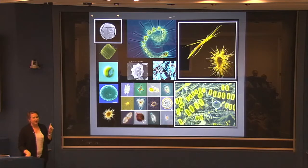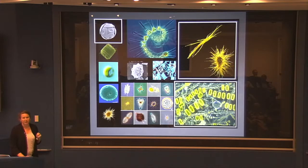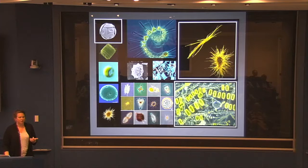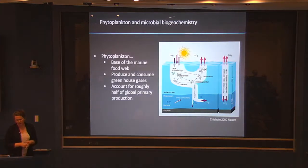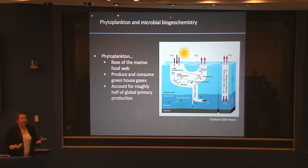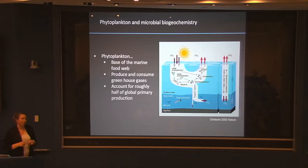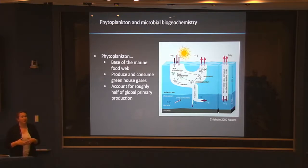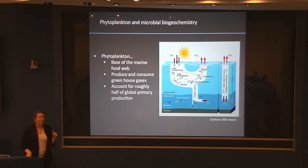Another personal favorite are colonies of a nitrogen-fixing cyanobacteria called trichodesmium, which will make an appearance later. These phytoplankton serve diverse roles in the environment — they're at the base of the marine food web, like the plants of the ocean. They produce and consume greenhouse gases and account for roughly half of global primary production. Every other breath you take came from the ocean — from phytoplankton — not trees and plants.